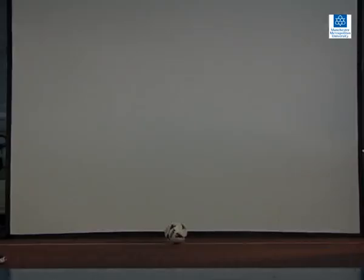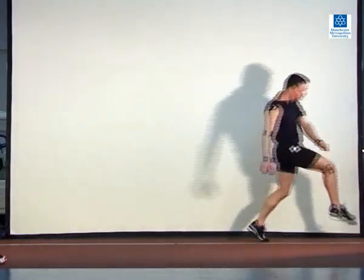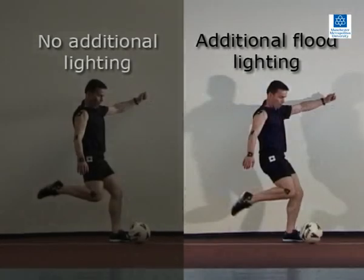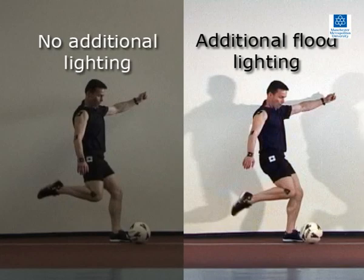This sequence shows a kick that has been filmed with a shutter speed of 1/600th of a second and with additional floodlighting. Comparing a still image from two sequences, both shot with a shutter speed of 1/600th of a second, the benefit of additional lighting can be seen.